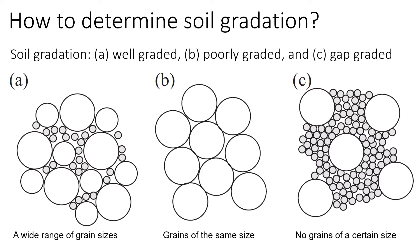The first one is well graded when we have a different range of grain sizes, so we can have large particles, medium size, and small particles. We have a poorly graded soil, and poorly graded soil divided into two types. The first one is uniform.